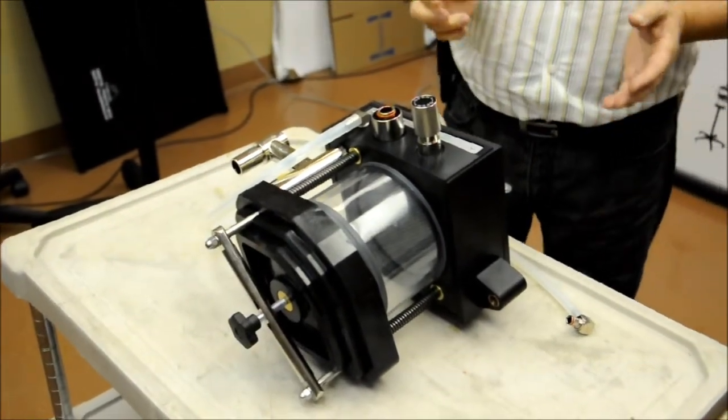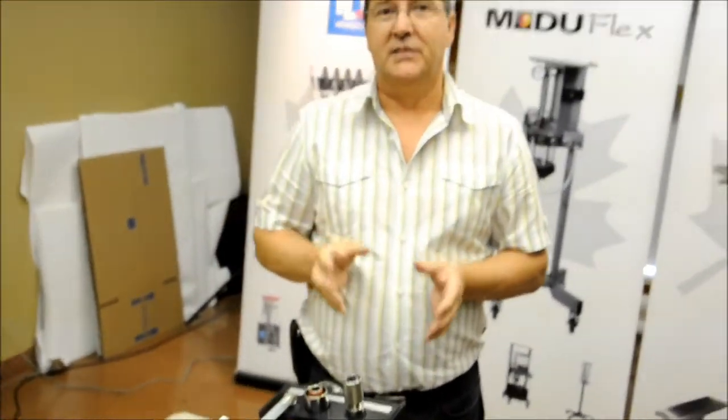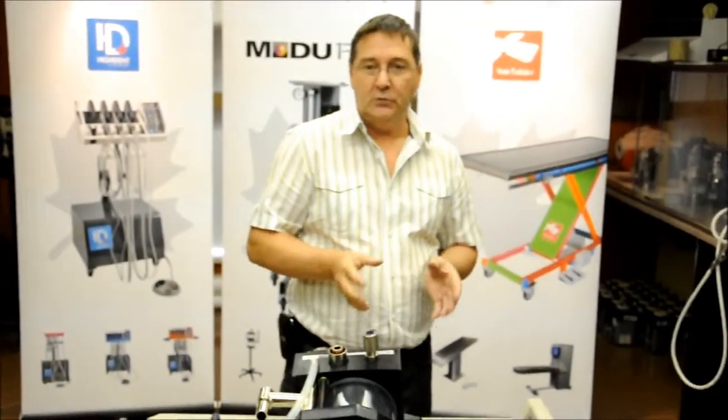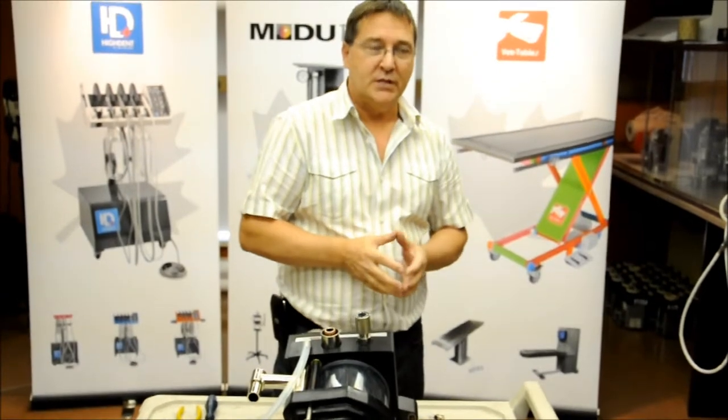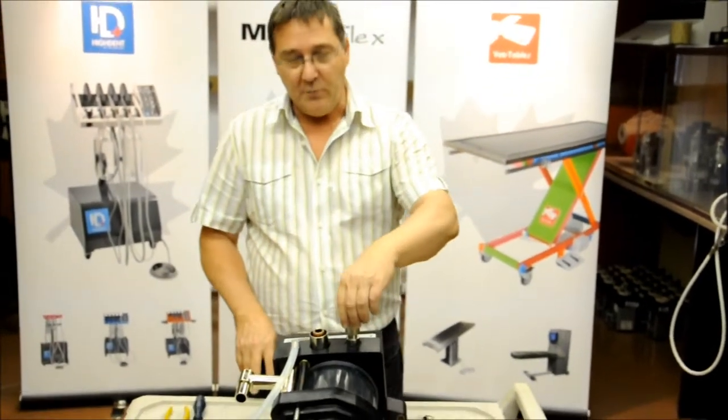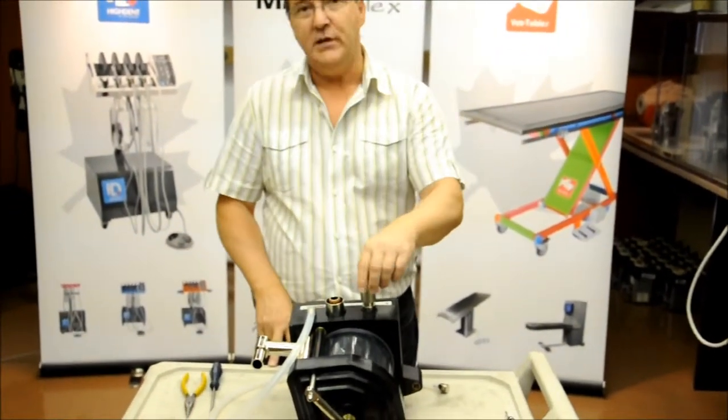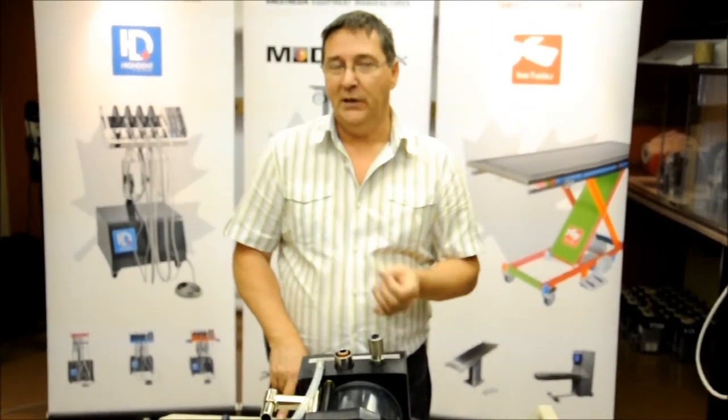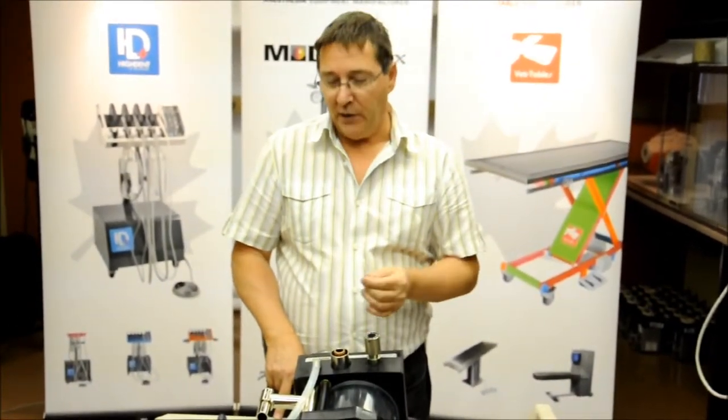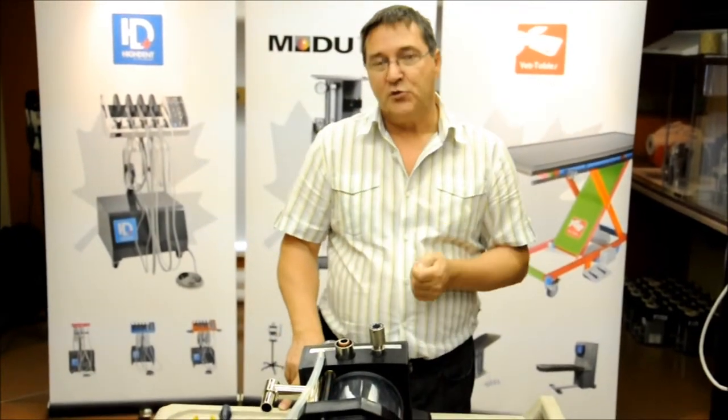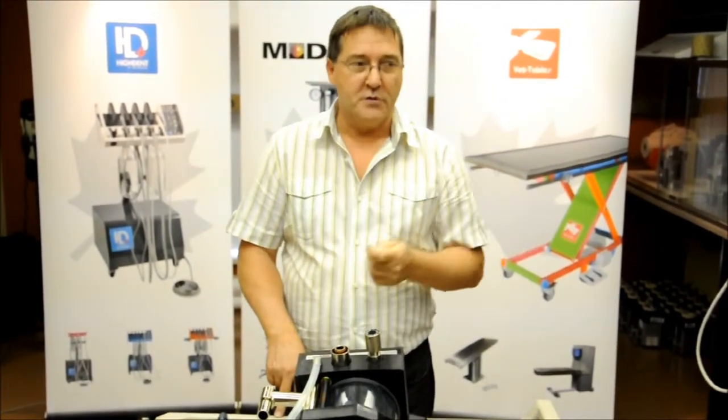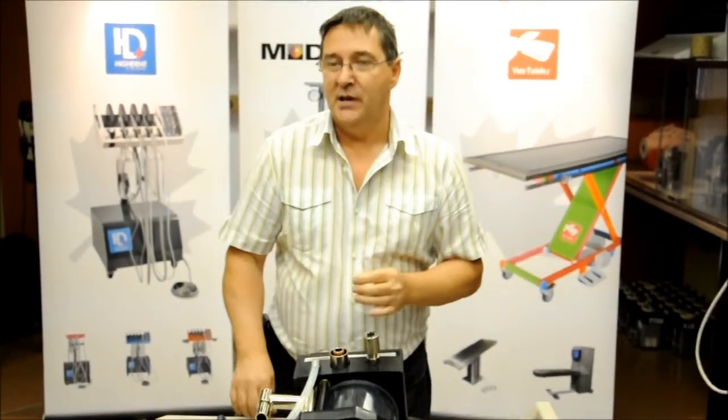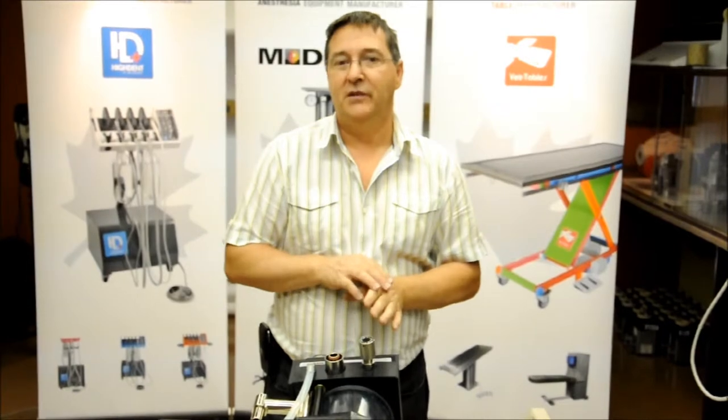Now all we have left to do is test our machine to make sure that everything operates properly. The way you will do that is you will take your breathing circuit with the pop-up valve on the machine fully open, turn your oxygen flow meter up to one liter per minute. At one liter per minute, you will obstruct the end of your breathing circuit with your thumb and watch the bag inflate on the machine. Leave the bag fully inflate.